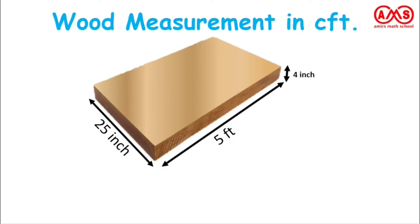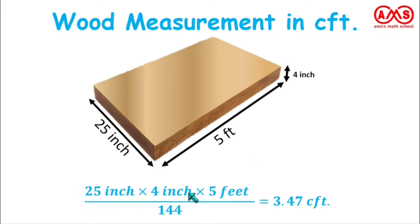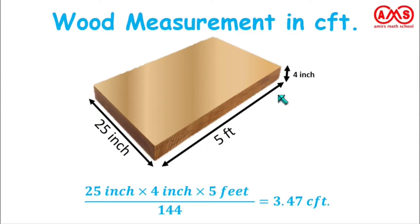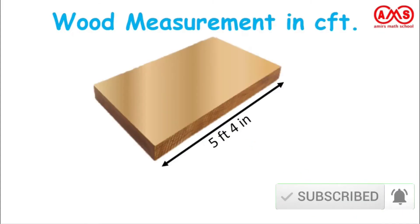In this case the formula is very easy: 25 inch times 4 inch times 5 feet, divided by 144. The length is in feet and the breadth and thickness are both in inches. That is 25 (breadth) times 4 inch (thickness) times 5 feet (length), divided by 144, which gives the value of approximately 3.47 CFT. So if any piece of wood is 5 feet long, 25 inches in breadth, and 4 inches in thickness, its measurement is 3.47 cubic feet.